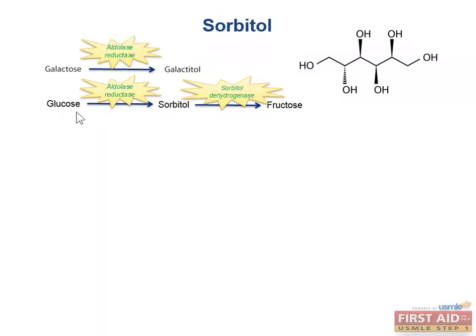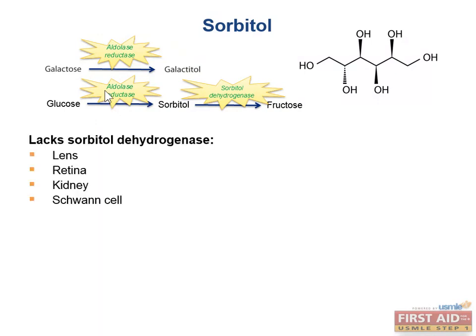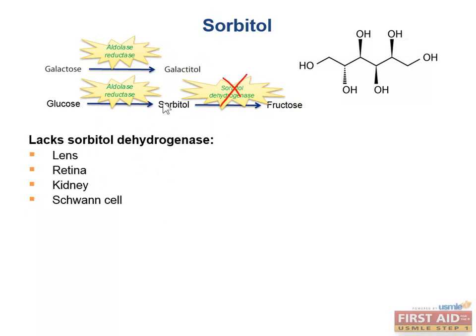Our goal here is to trap glucose within the cell via aldose reductase. However, if a tissue lacks sorbitol dehydrogenase — the enzyme that breaks down sorbitol — toxic levels of sorbitol can accumulate. Sorbitol accumulates inside cells, which causes damage because it's osmotically active, creating a gradient that pulls water into the cell, causing it to swell.